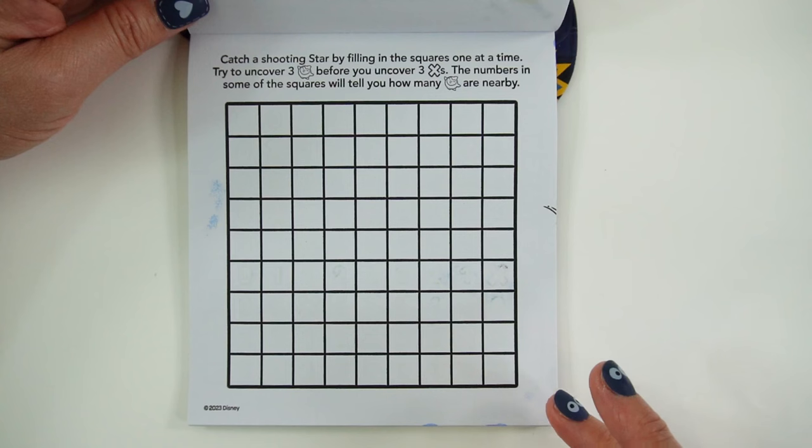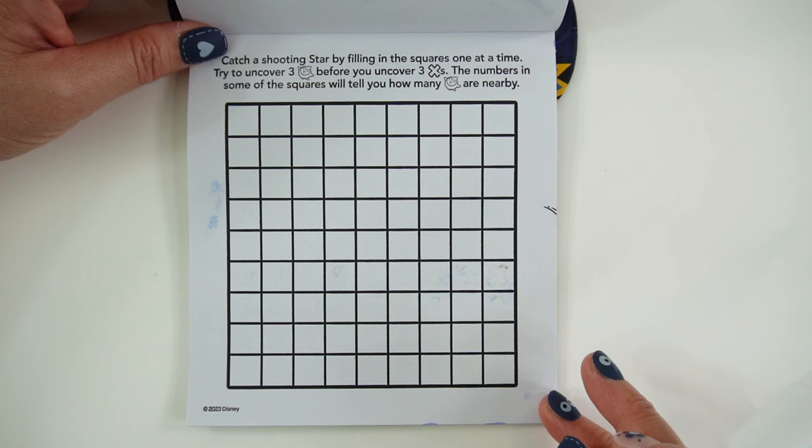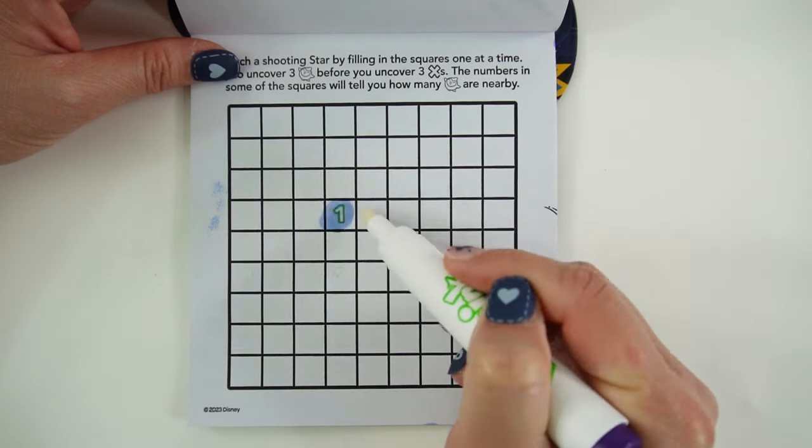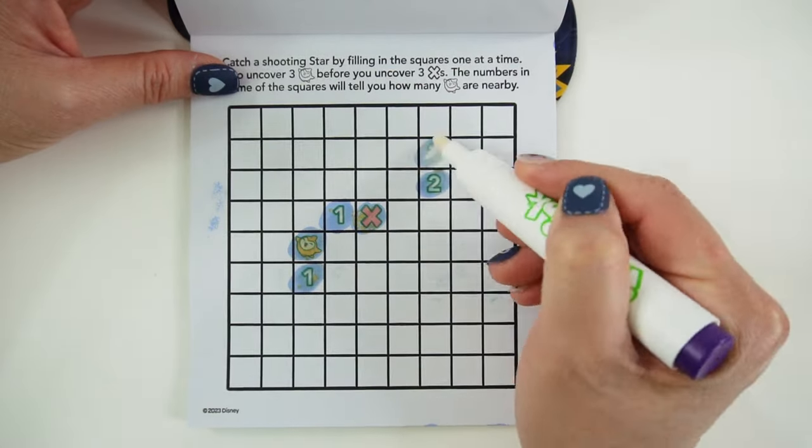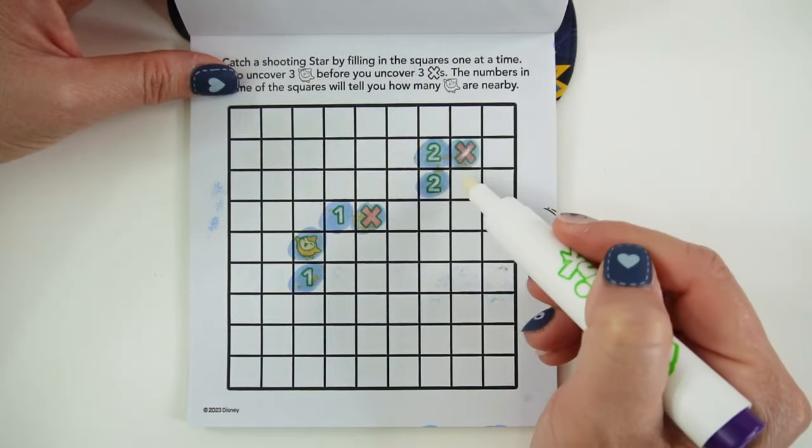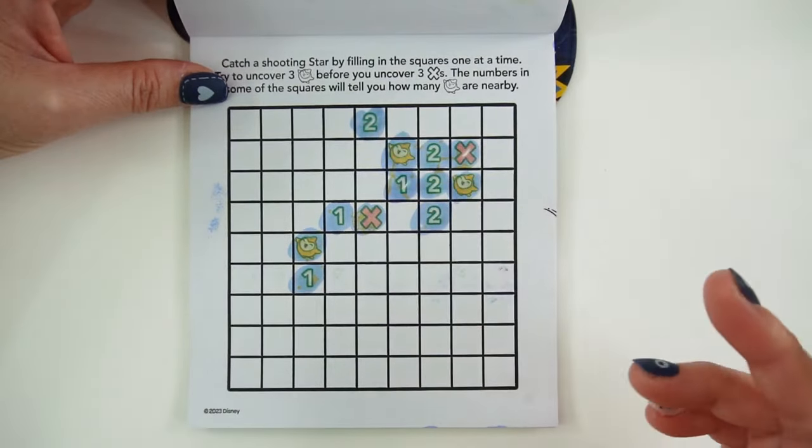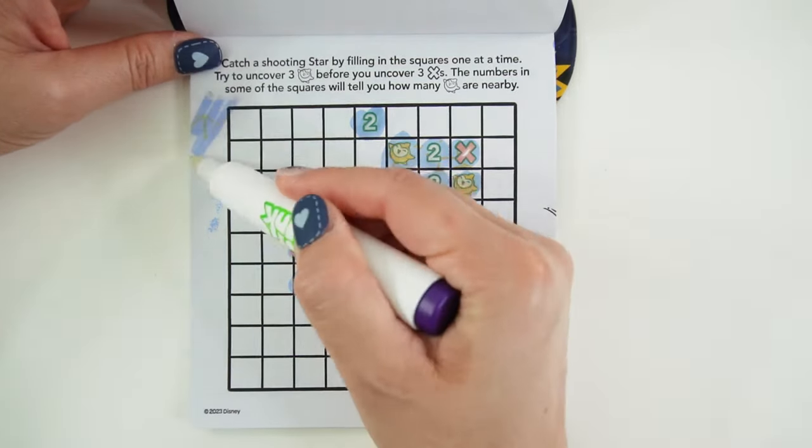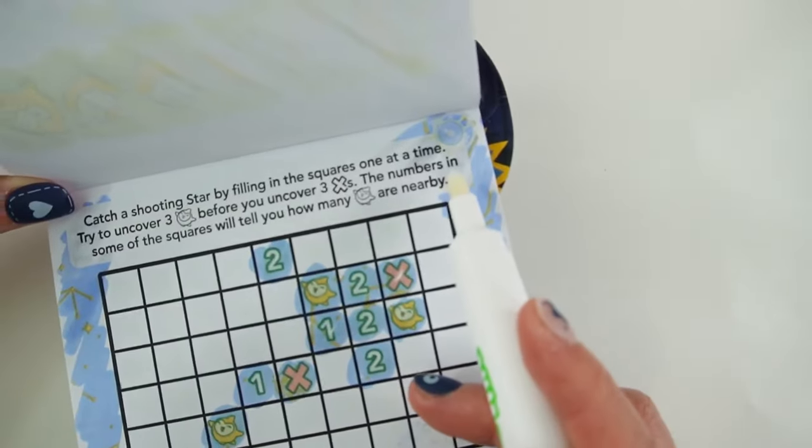Here it says, catch a shooting star by filling in the squares one at a time. Try to uncover three stars before you uncover three x's. The numbers in some of the squares will tell you how many stars are nearby. So let's start here. Oh no, we got an x. There's one. We got another x. Oh, actually we got three stars. We did it. Let's find our wish. Our wish is up here in the corner.